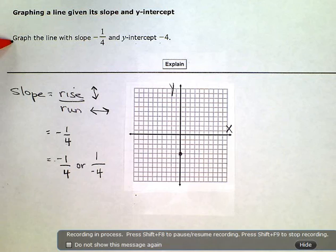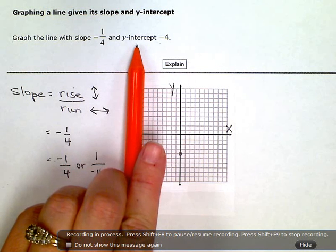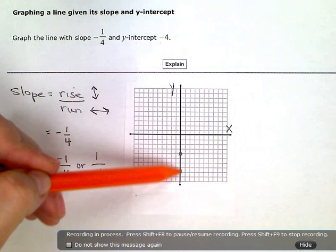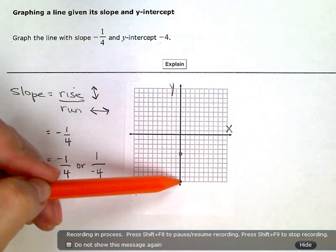When I'm graphing a line, I want to start with the y-intercept number. This is the place where I know my line will cross the y-axis, which is the up-down or the vertical axis.